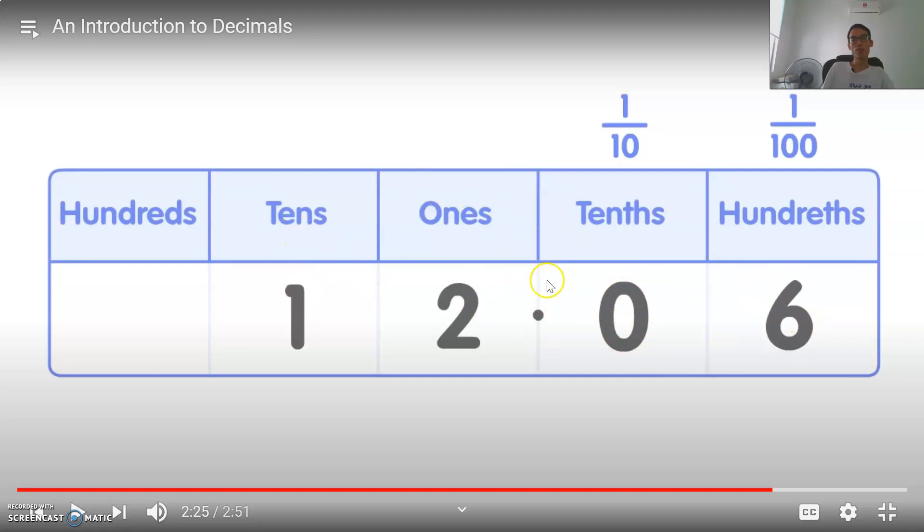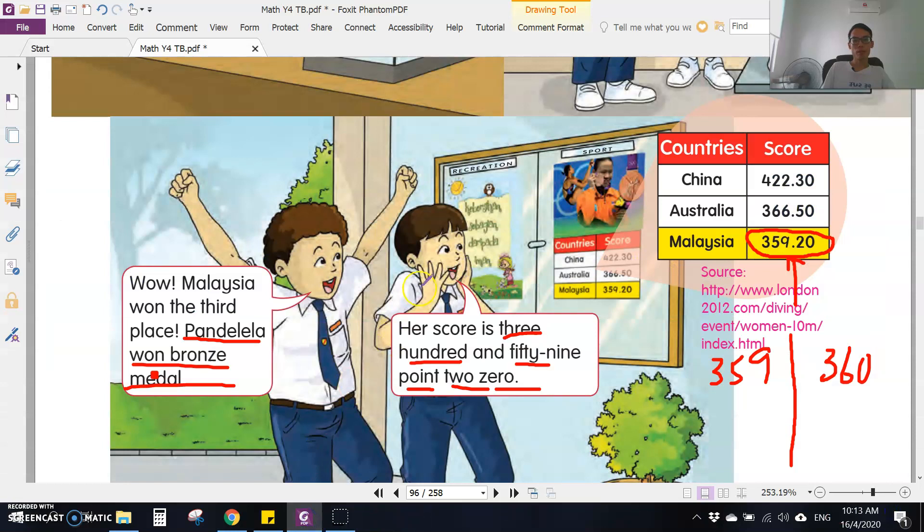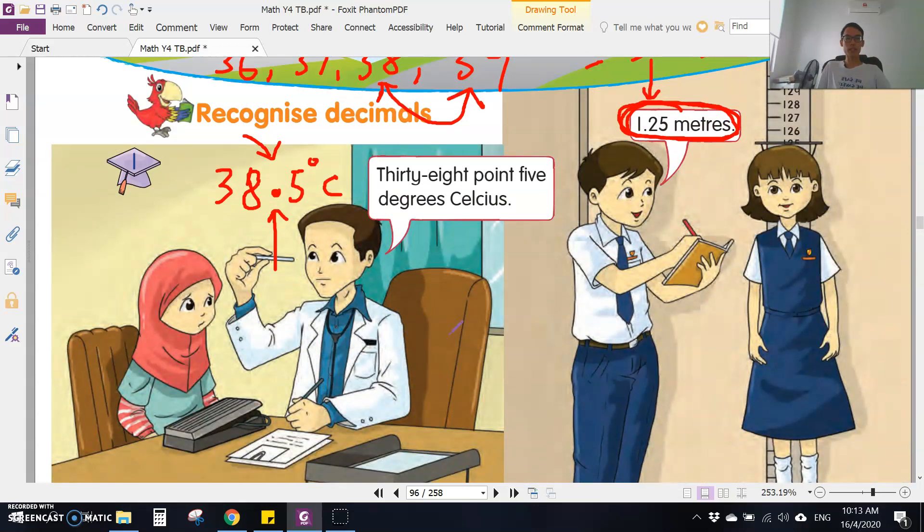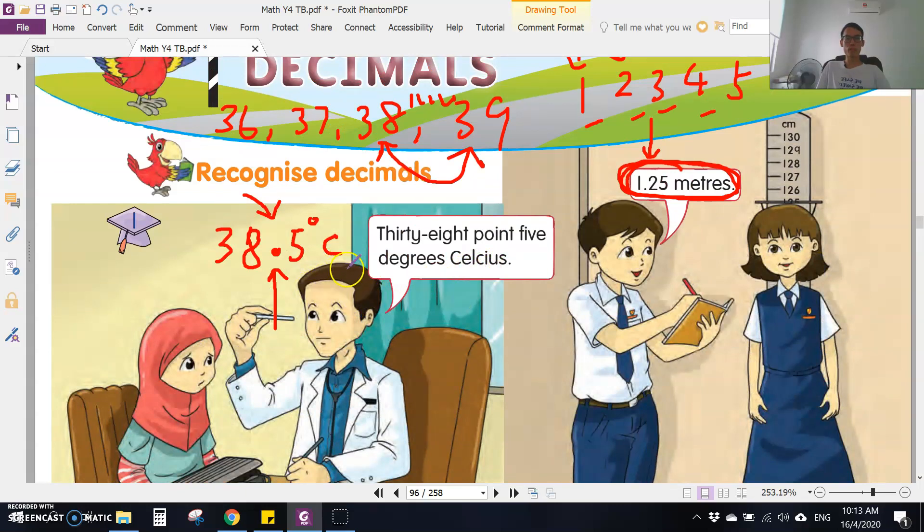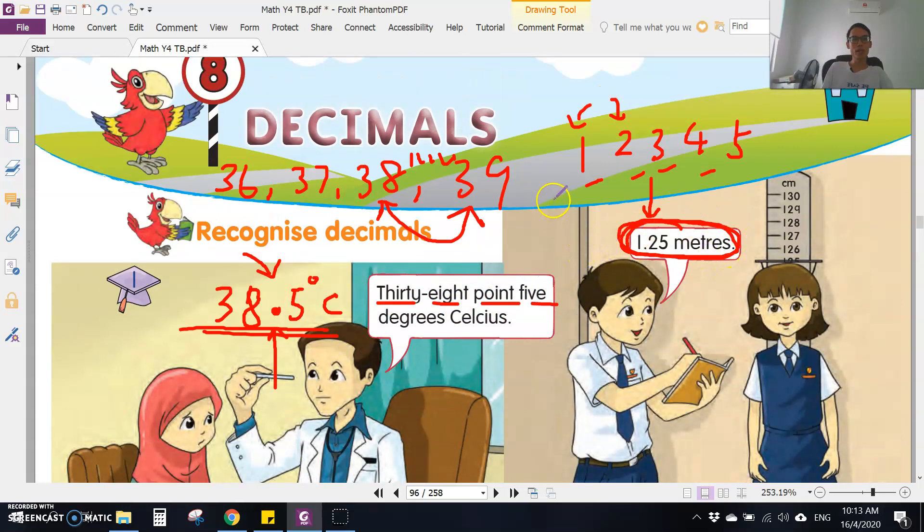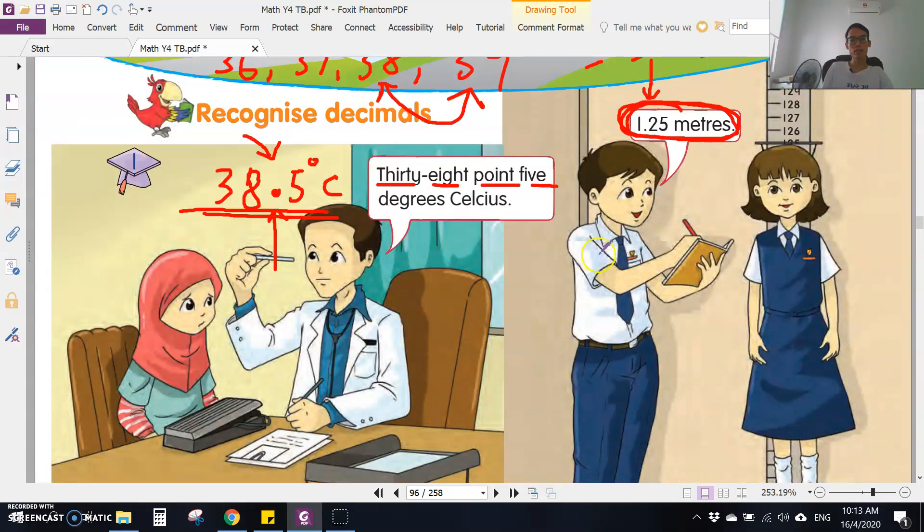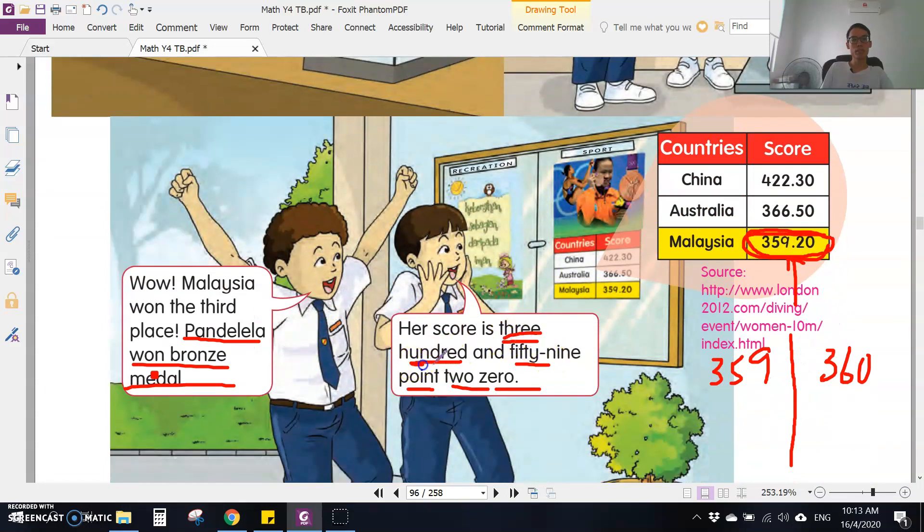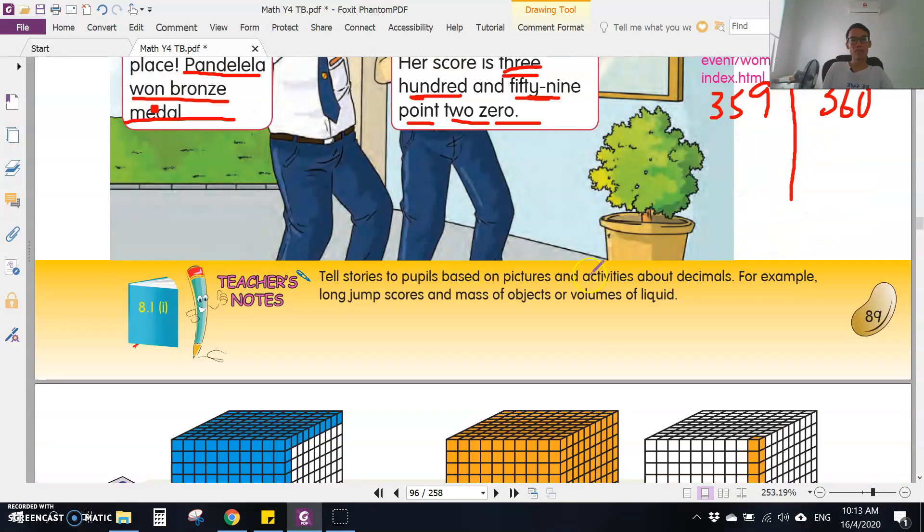Later you have an exercise where you have to write the decimals in words. How should you write the decimal in words? Just like how you write the normal numbers. For example, 38.5, you write thirty-eight point five. 1.25, you write one point two five. Just like that. This one, 359.20, you write it as three five nine point two zero. If there's a zero, you put zero behind.